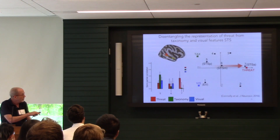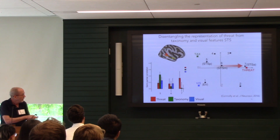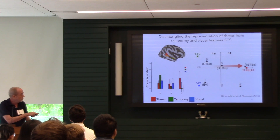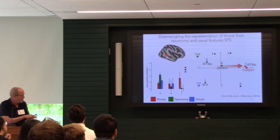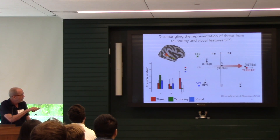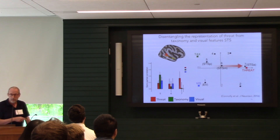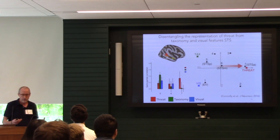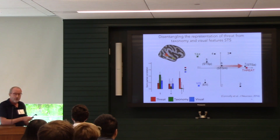Another set of regions in the right superior temporal sulcus showed that taxonomy is dominant in the most posterior area, but becomes less evident moving anteriorly, while similarity to the threat similarity structure increases. In the multidimensional scaling plot of these areas, it goes from something similar to taxonomy to something very close to the threat model. So representational geometry is not one thing in the brain — it's a set of structures that varies by cortical region, and these are very meaningful changes.